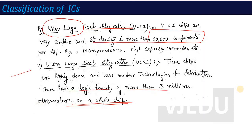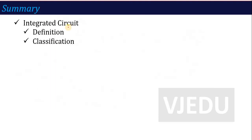This is all about IC technology — what is IC, its definition, its classification, and the different technologies such as SSI, MSI, LSI, VLSI, and ULSI. With this, unit number 4 is completed.